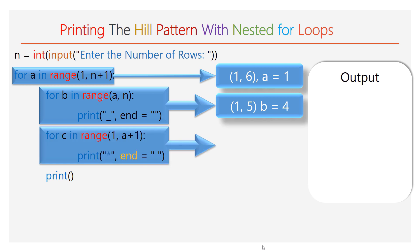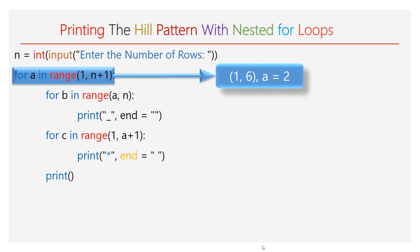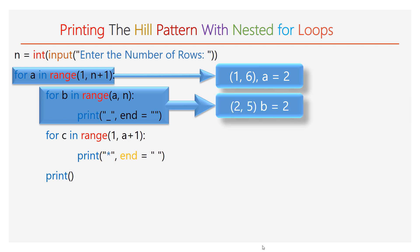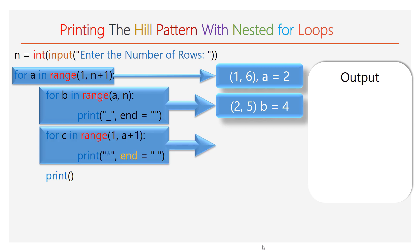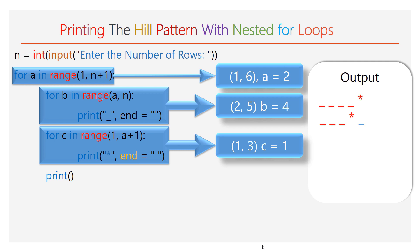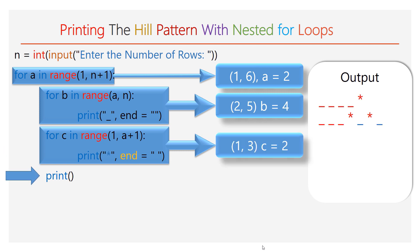Next, the execution comes to the second inner for loop. The range of c will be 1 to a+1, and the value of c will be 1 during the first iteration. One star will be printed along with a space. Then the empty print function is executed and the cursor moves to the second line. Now the value of a will be 2. The first inner for loop will have range 2 to 5, iterating only 3 times, printing 3 spaces. The second inner for loop will have range 1 to 3, iterating 2 times, printing one star with a space each time. The empty print function is executed and the cursor moves to the third line.